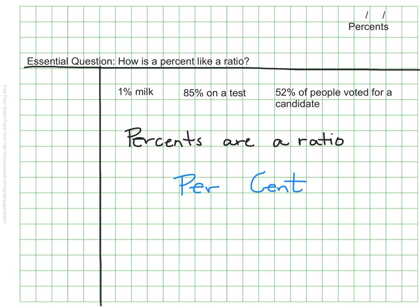We've used the term per a lot lately because we've been talking about unit rate, and we know that per means for each. Cent is a prefix that means 100, like century or since. Percent, therefore, means for 100.